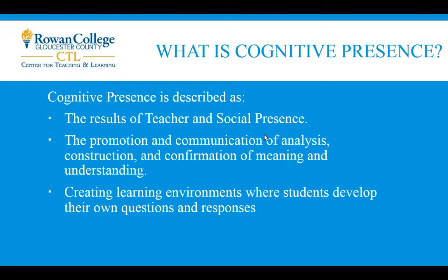Cognitive presence can be seen in a course in two different ways. First, by communicating the purpose of the course materials, activities, and assessments, we give students a glimpse of the bigger picture. They can understand why they're doing something instead of just what to do. When there is cognitive presence in a course, students are aware that an assessment could connect to a bigger project or that you're helping build a real-world or professional skill. It's the application and awareness of those learning objectives in a course.